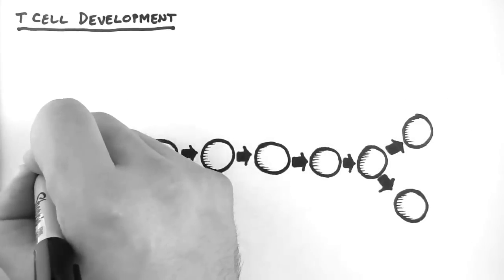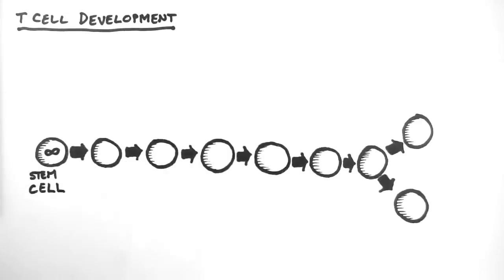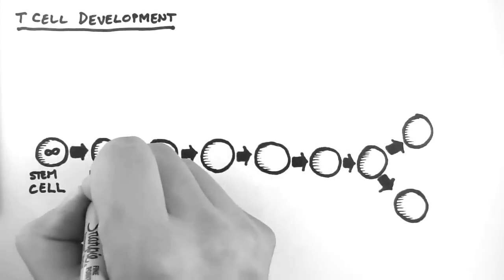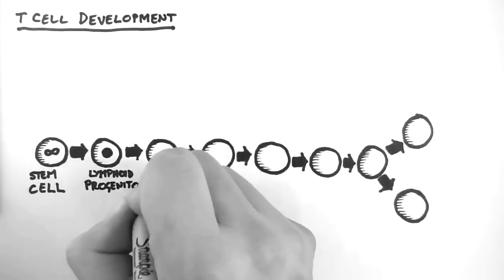Like all cells, the T cell initially arises from a stem cell. The stem cell then differentiates into the lymphoid progenitor cell. This is opposed to the myeloid progenitor cell.